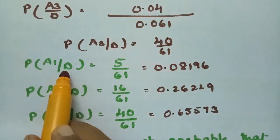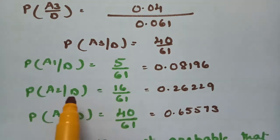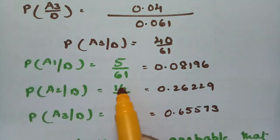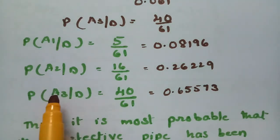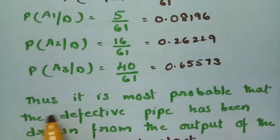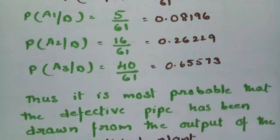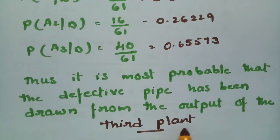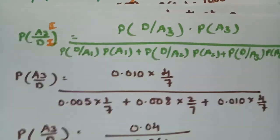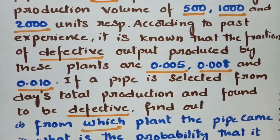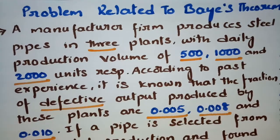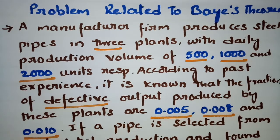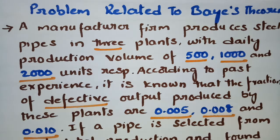Therefore, P(A1|D) = 5/61, P(A2|D) = 16/61, and P(A3|D) = 40/61. Since 40/61 is the largest, it is most probable that the defective pipe was drawn from plant A3. Even though the problem is lengthy, keep reading it two or three times, underline the numerals, and analyze them using the Bayes' theorem formula.